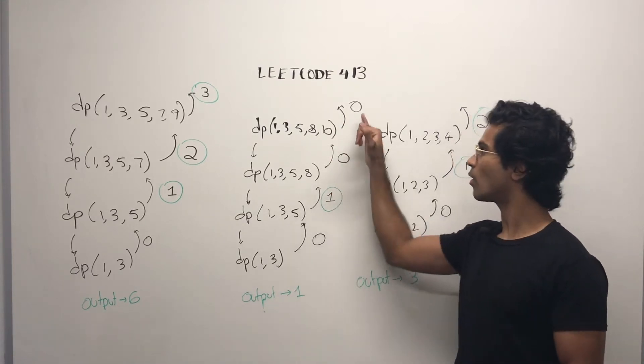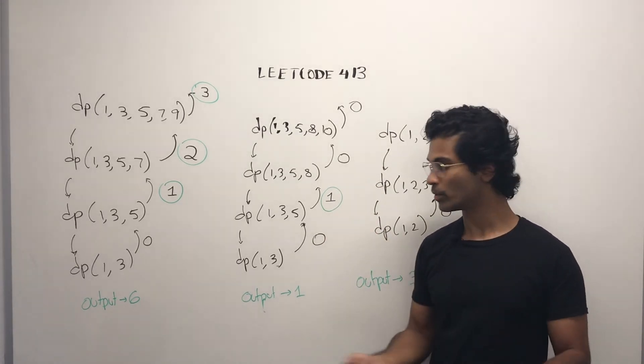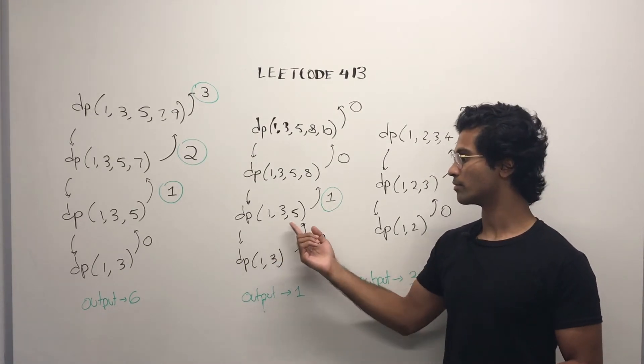Our job is to collect all of these values that are being passed up. So 1 is going to be the output of here because we have 1, 3, and 5.